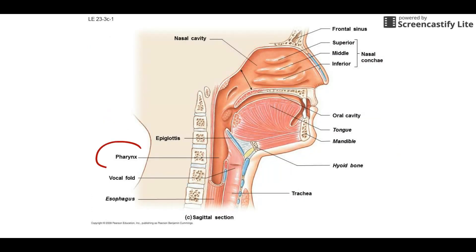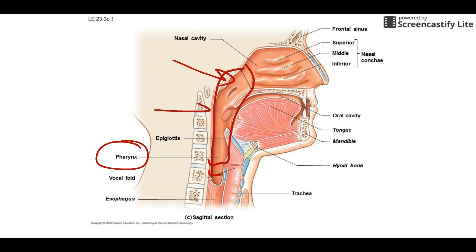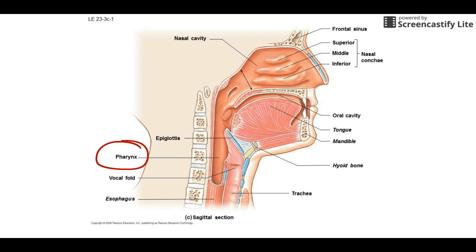The next structure is the pharynx, which we covered previously. It's this whole area behind the mouth going down to about here. It can be broken down into the nasopharynx and oropharynx, but in general it's just the pharynx — what we'd think of as the throat. It is a passageway for both air going down toward the lungs and food going toward the esophagus. It doesn't do a lot of filtering because it's pretty wide open, and it doesn't do digestion — it's just a passageway.